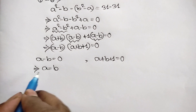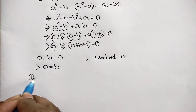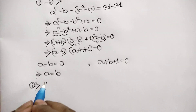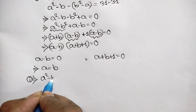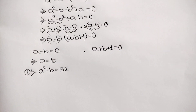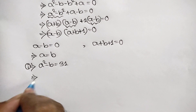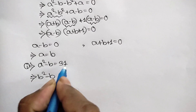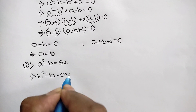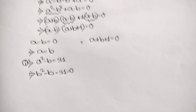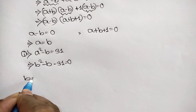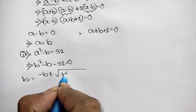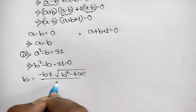Recalling our first equation, A squared minus B equals 31. Since A equals B, we substitute to get B squared minus B equals 31, and taking 31 to the left side gives B squared minus B minus 31 equals 0. Now we can apply the quadratic formula.